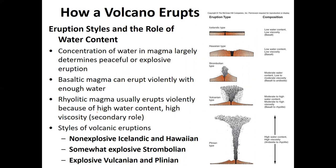The concentration of water in magma is, along with viscosity, a controlling factor for eruption type — and it's slightly more important than viscosity. Even basaltic magma with low viscosity can have violent eruptions if it has enough water. Conversely, rhyolitic magma with very little water won't have a violent eruption — it will just be a very thick, oozy magma that comes near the surface but doesn't explode. Eruption styles range from non-explosive Icelandic or Hawaiian, to somewhat explosive Strombolian, to explosive Volcanian and Plinian.